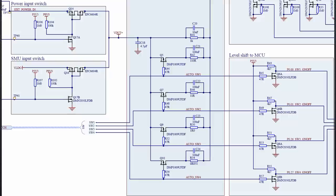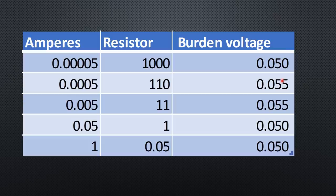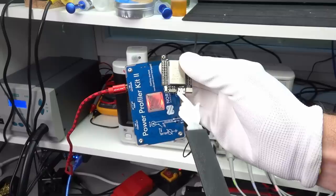The power profiler has five ranges that are automatically adapted to the current flow. If we look at the diagram, we see the respective resistors. 1 kOhm, 110, 11, 1 and 0.05 Ohms. So, the maximum burden voltage in all ranges is around 0.05 volts. Negligible for our purpose. The switching has to be done very fast. Otherwise, our ESP32 would create a brownout.